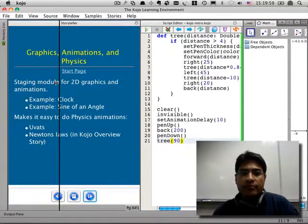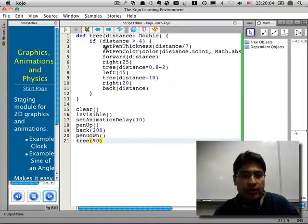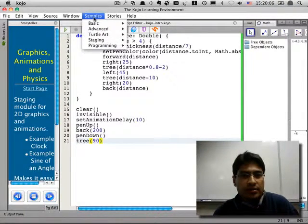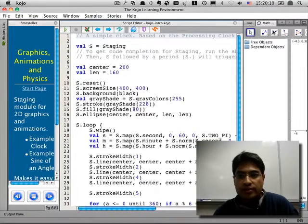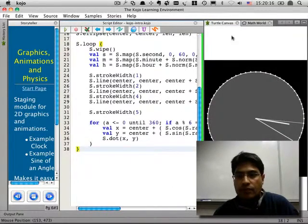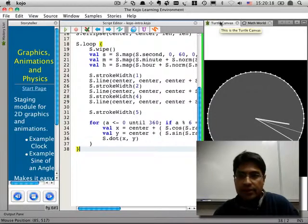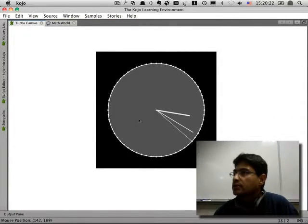The other kind of thing you can do within Kojo is to make animations. I'll show you an example of that. Go into samples and staging, and let's try the clock animation. So that's like a 38 line program that draws a clock on the screen.